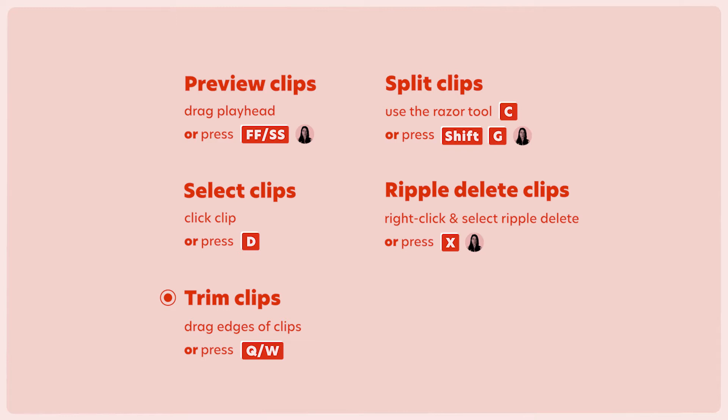You can press the Q key to trim off everything before the playhead on a clip, or the W key to trim off everything after the playhead on a clip.